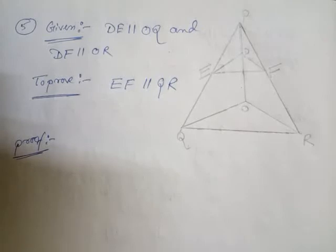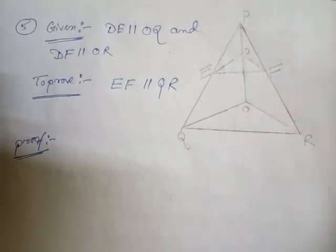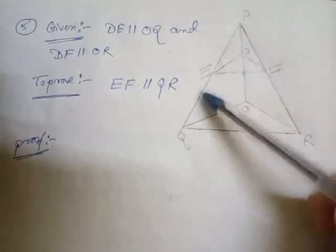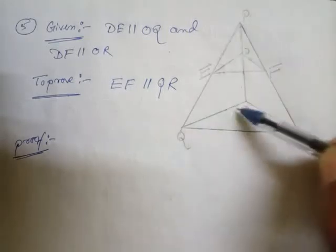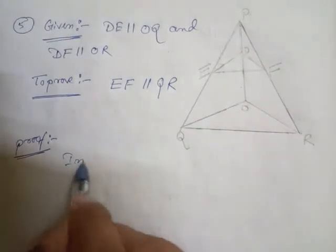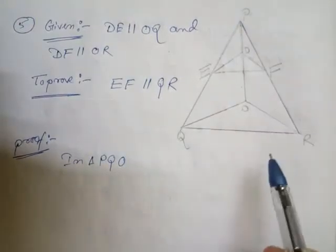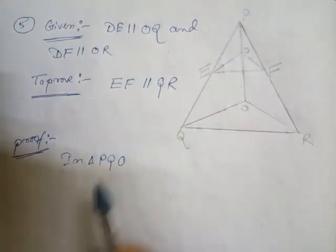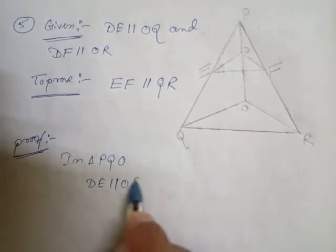So we have to prove this now. First of all, I am taking the given condition DE parallel to OQ — I will take this part only. In triangle PQO — which means this triangle — DE is parallel to OQ.